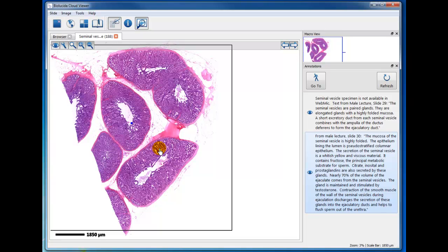They have an excretory duct that joins from each seminal vesicle and combines with an enlargement of the ductus deferens to form the ejaculatory duct. And it's through that ejaculatory duct that both sperm and the secretion of the seminal vesicles pass.